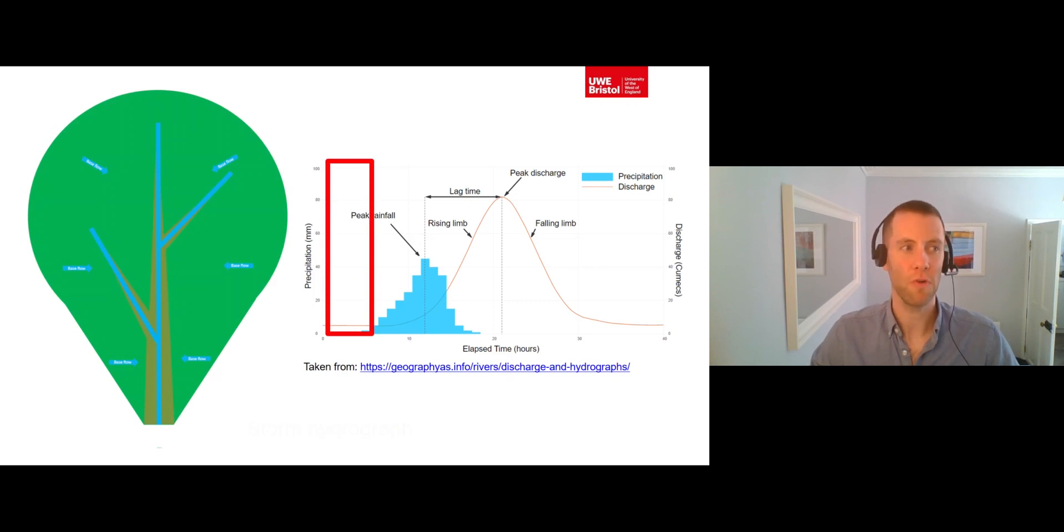So to start with, before any rainfall event, the hydrograph displays the base flow of the river. This is the low level of discharge in the river that is supplied by groundwater flow that has been slowly moving through the bedrock of a catchment and so is not dependent on any recent rainfall event.